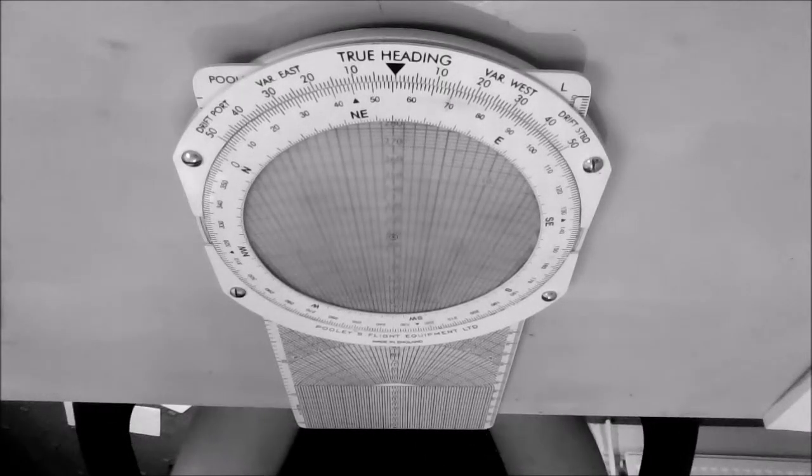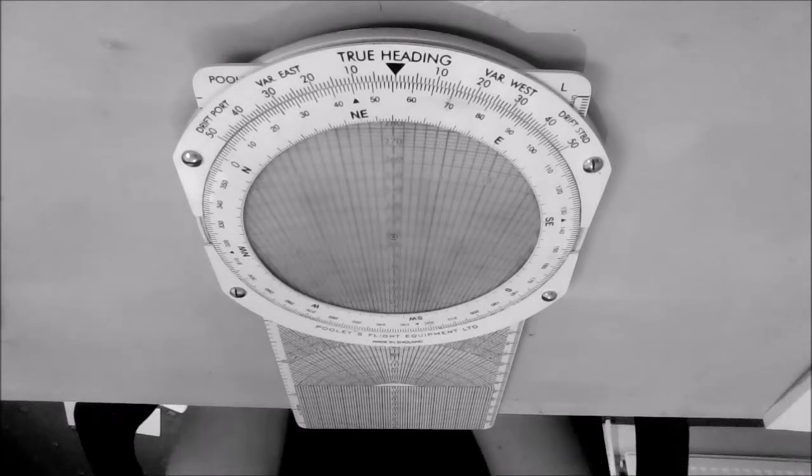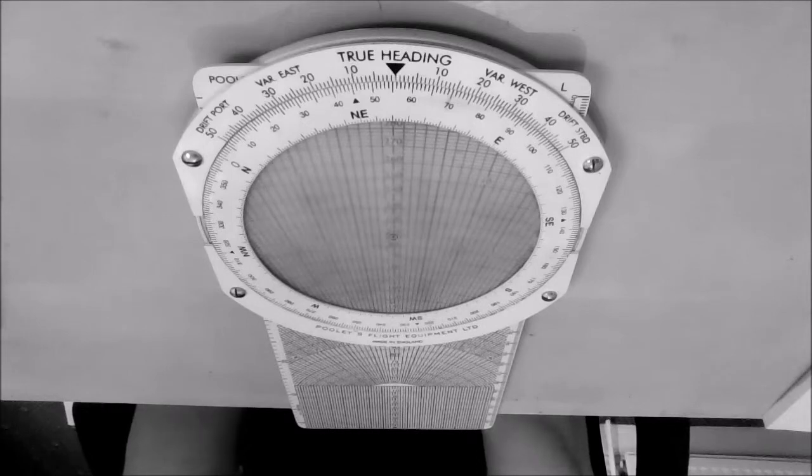Okay, so this is another CRP5 video. In this one I'll be teaching you how to calculate your drift and ground speed provided that you have your true track, your TAS, and your wind direction and velocity.